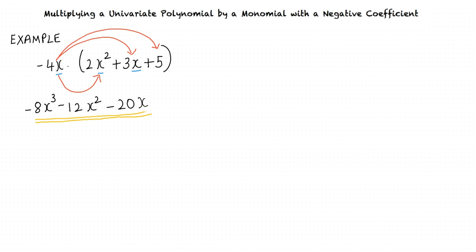Thus, negative 4x times 2x square plus 3x plus 5 equals minus 8x cube minus 12x square minus 20x. Okay, I think I get it. In order to determine the product of a univariate polynomial and a monomial with a negative coefficient, we use the distributive property to compute the product. That is correct.